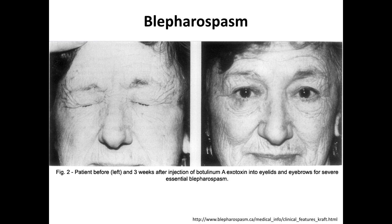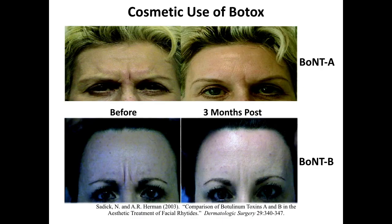In this case of blepharospasm, the patient can open her eyes after injection of botulinum toxin to stop the involuntary eyelid and eyebrow contractions. Here are some examples of more cosmetic use of Botox, where the wrinkling in between the eyebrows is drastically decreased after Botox injection.